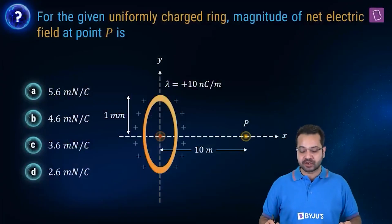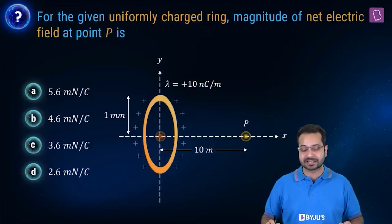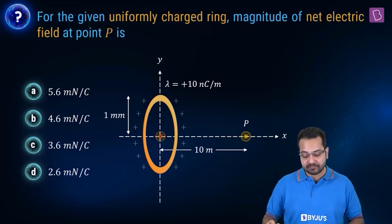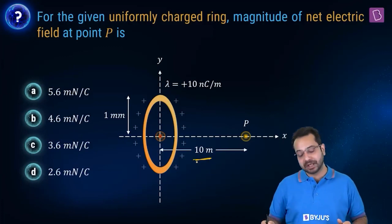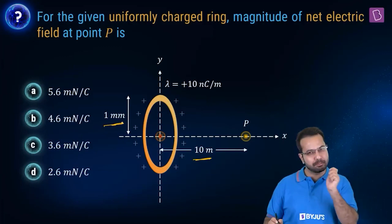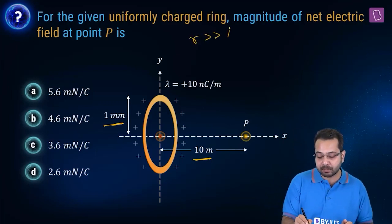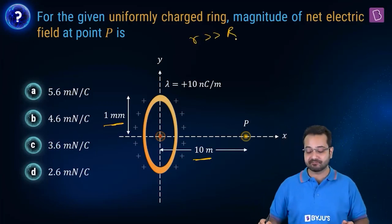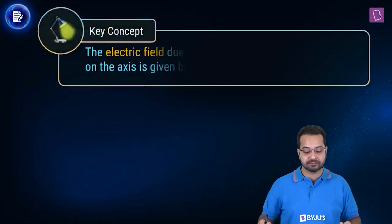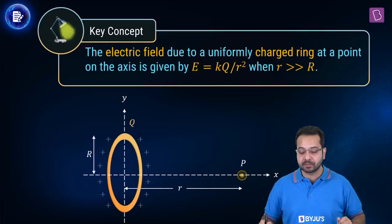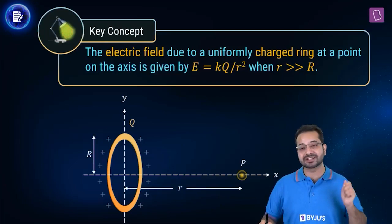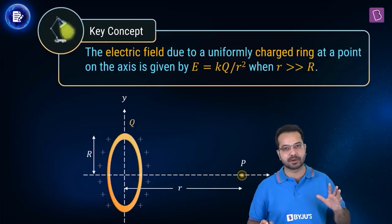For the given uniformly charged ring, the magnitude of the net electric field at point P is? We have a uniformly charged ring and P is a point on the axis. What we need to notice here is that small r is 10 meters and capital R is 1 millimeter, so small r is much, much greater than capital R. The key concept here is that the electric field simplifies to E = KQ/r² when r >> R.